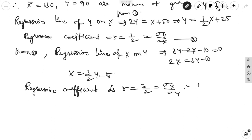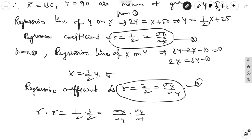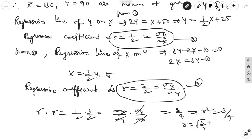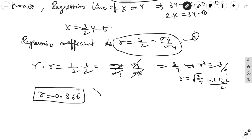Taking the two regression coefficients — b_yx equal to 1/2 (y on x) and b_xy equal to 3/2 (x on y) — the product r squared equals (1/2) into (3/2) equal to 3/4, since the sigma x and sigma y terms cancel. Therefore r equals under root of 3/4, which equals 1.732 by 2, giving r equal to 0.866.